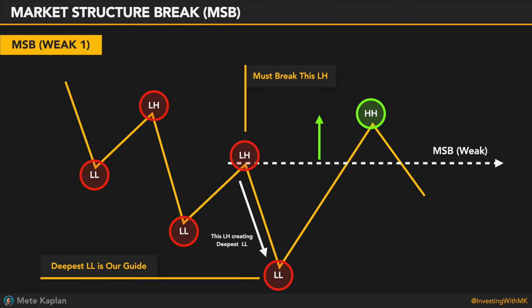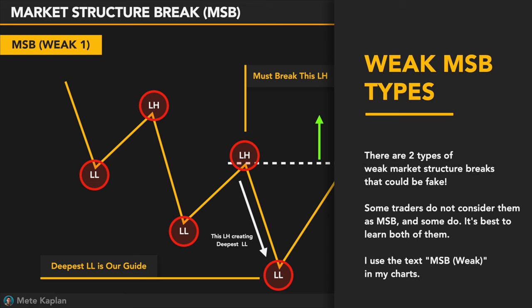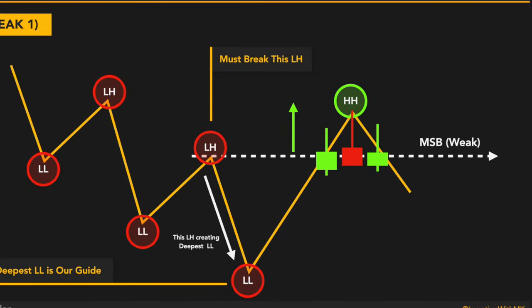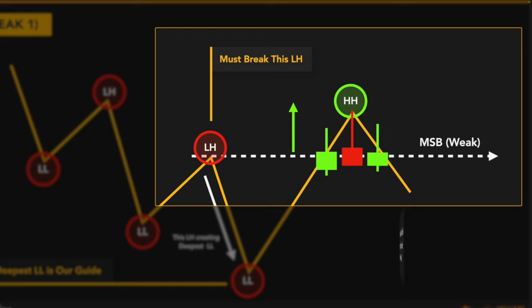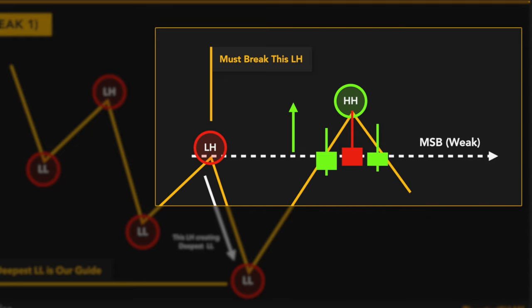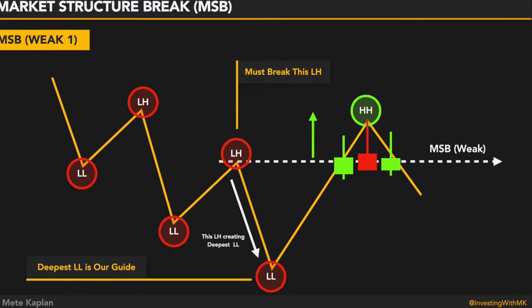There are two types of weak market structure breaks that could be fake. You should be aware of them. I still consider them as market structure breaks, but I always take a note by saying weak MSB, so I should be more cautious. Some people do not even consider them as MSB. The first type is very similar to strong MSB. However, instead of breaking the last lower high at once with strong candlesticks, price struggles a lot — you will see lots of wicks and quite a struggle. If the price returns from there, it is a weak MSB.